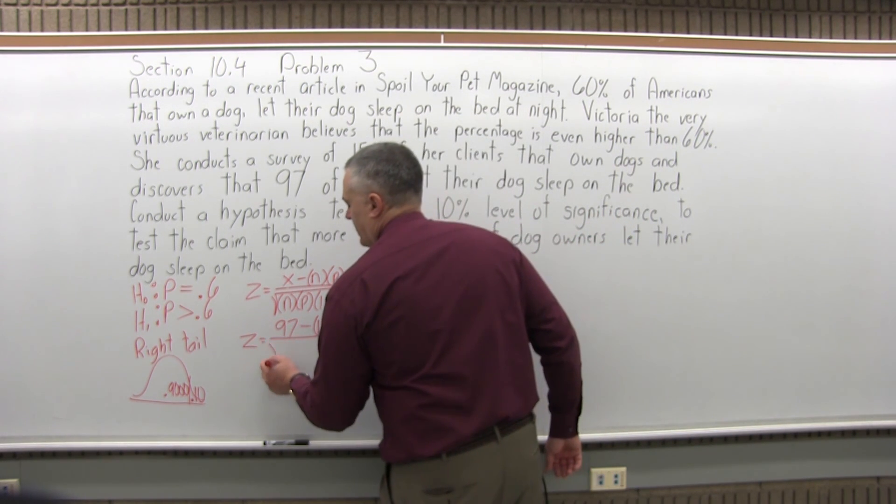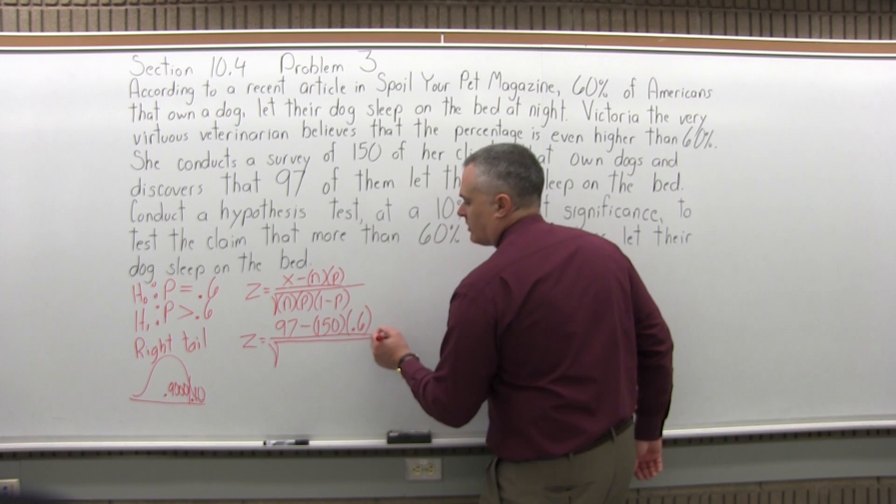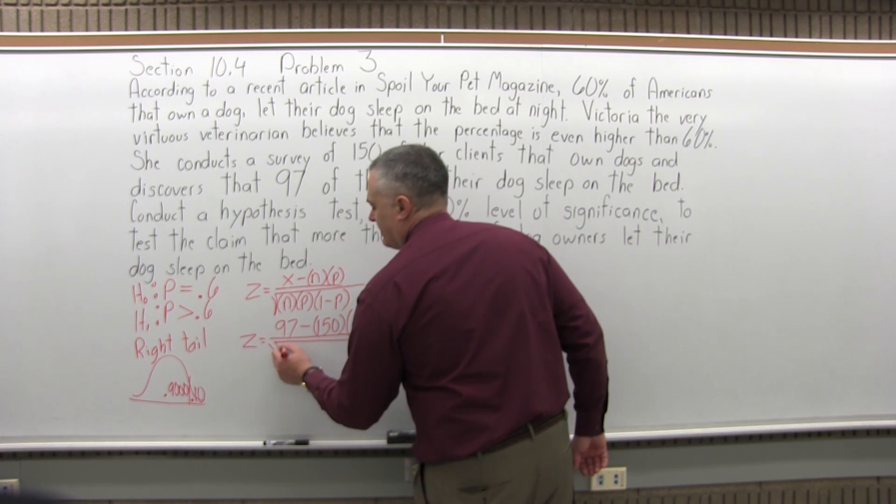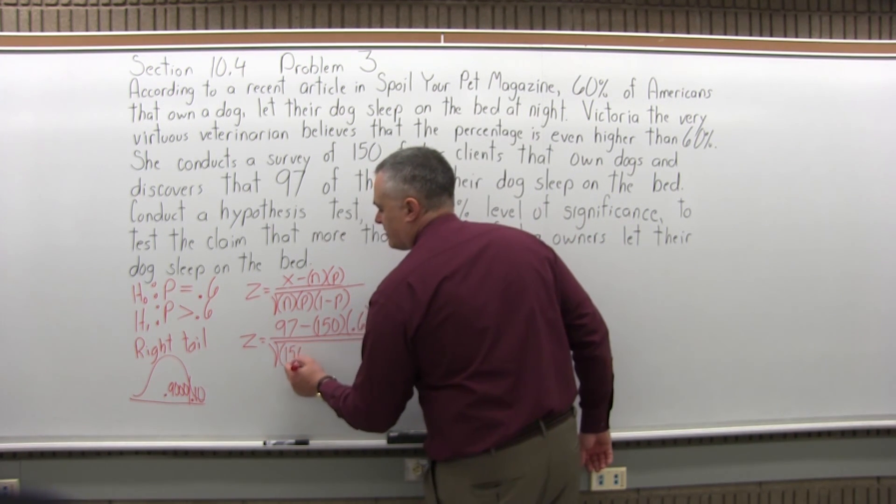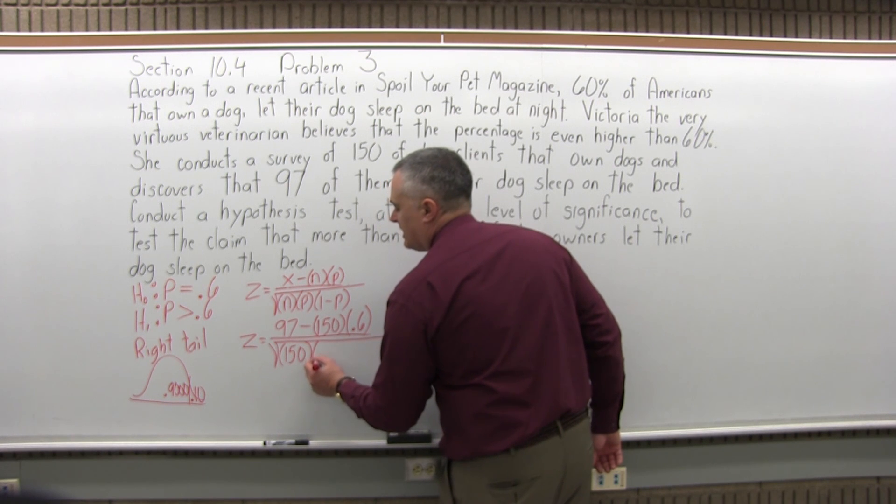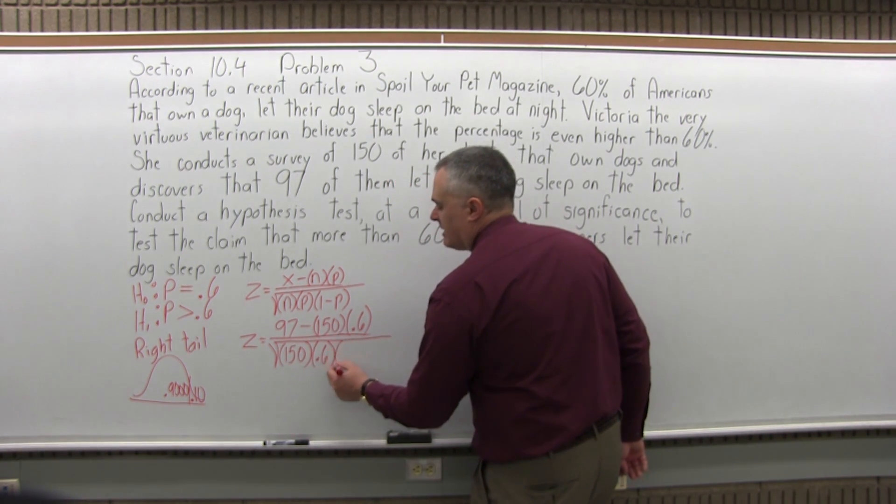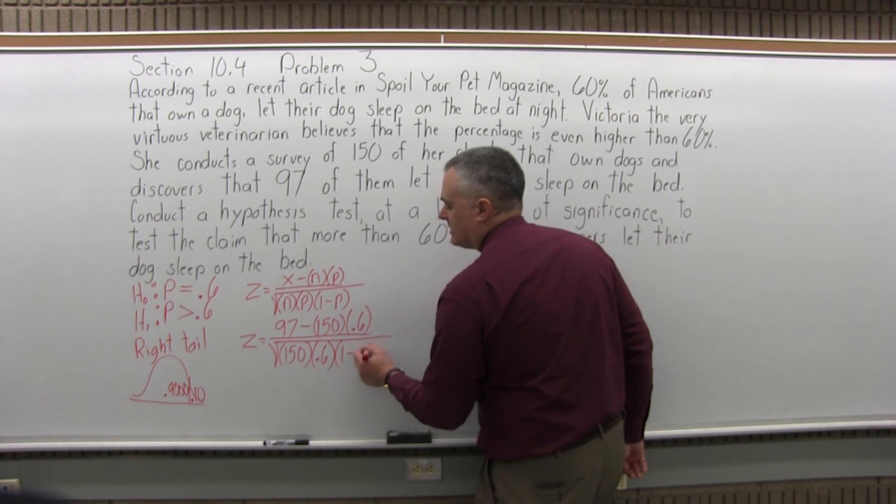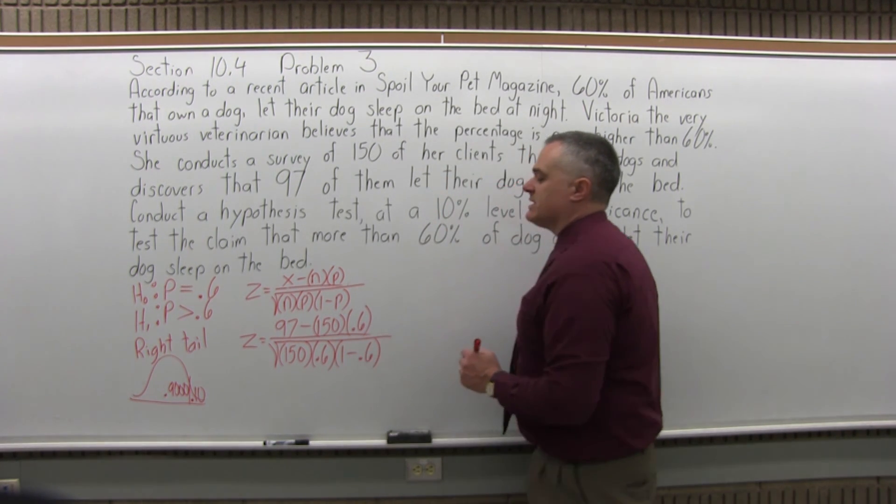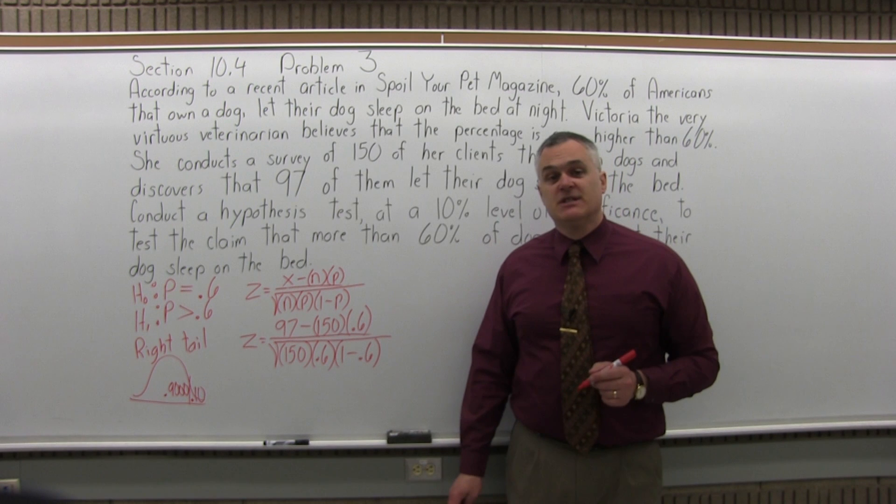In the denominator, you will have square root of n, size of the sample, which again is 150, times p, 0.6, the percent or proportion that you're testing, times 1 minus p, so 1 minus 0.6. That's how the formula for z fills in.